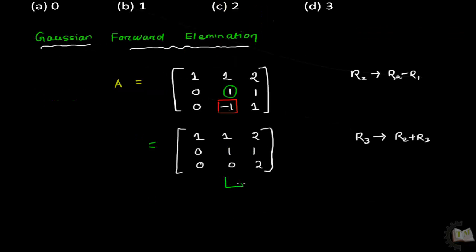This form is called echelon form of matrix. What is echelon form? What is the definition of echelon form? A matrix is said to be in echelon form. First point says that 0 rows if any must be the last row. Observe this. There is no zero row.